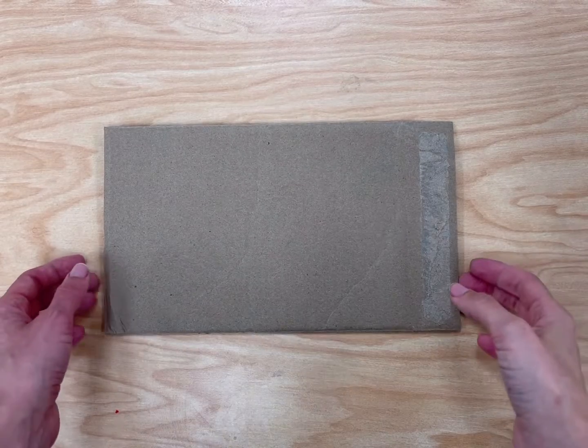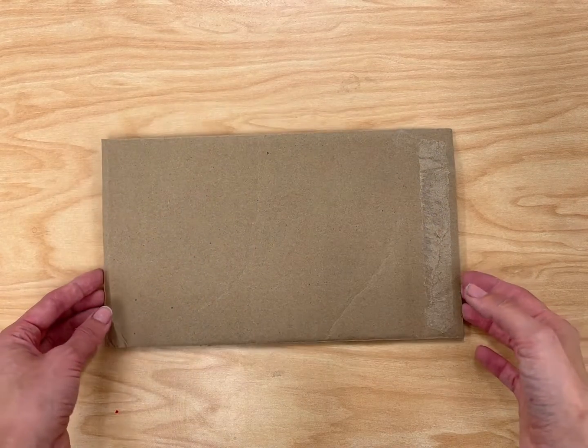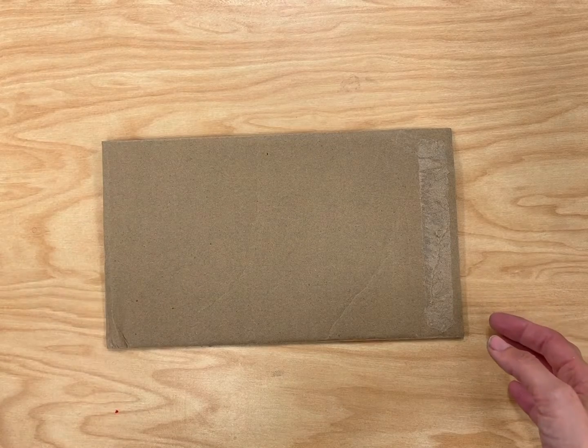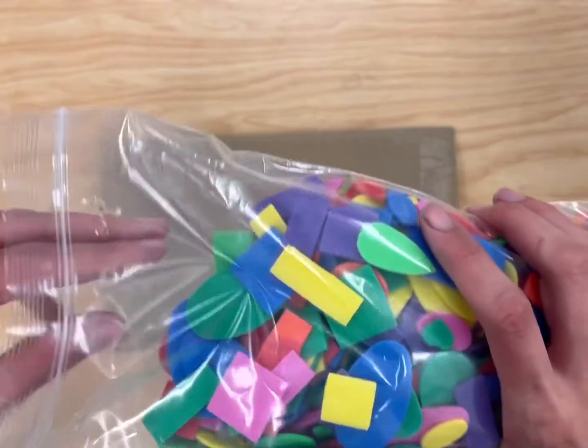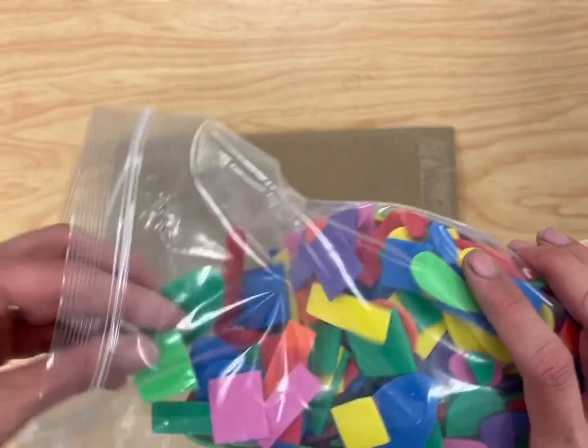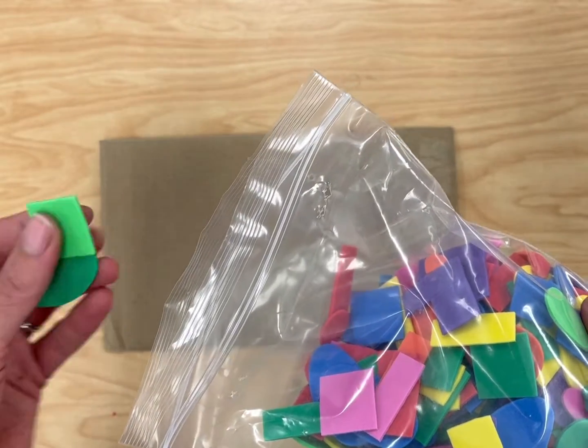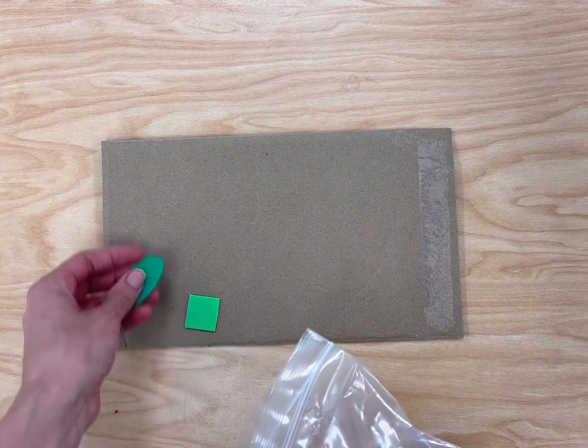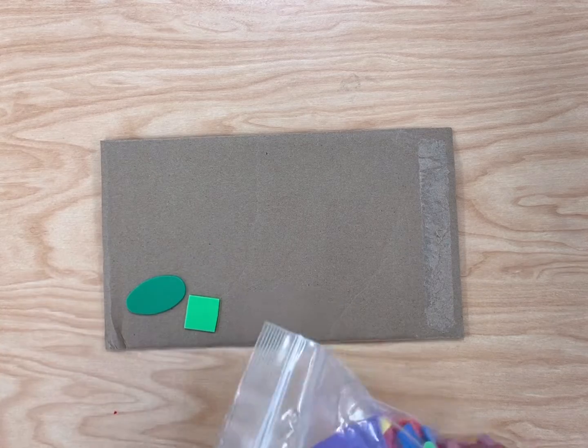Today we're going to create some art using only shapes. The basis of art, whether it's drawing, painting, or making a collage, is using different kinds of shapes and combining them to create an image that we recognize. So we're going to practice creating a few different kinds of pictures using only shapes on our cardboard.